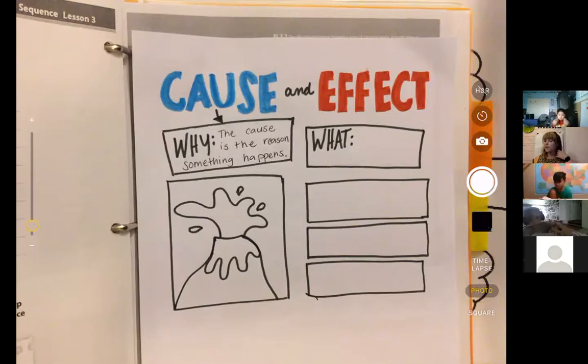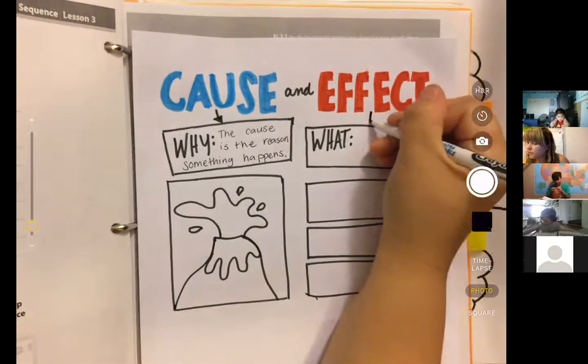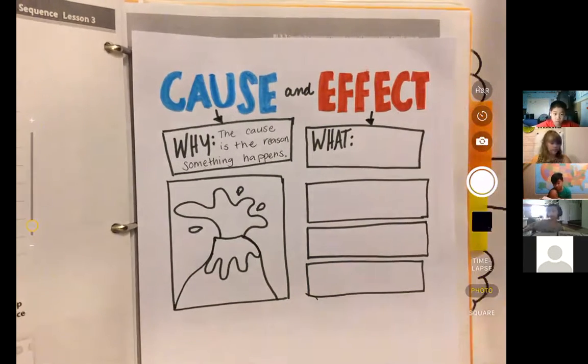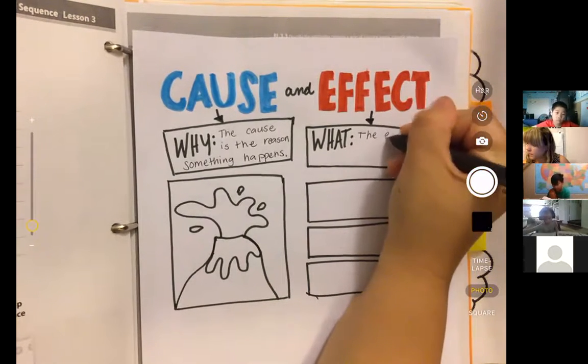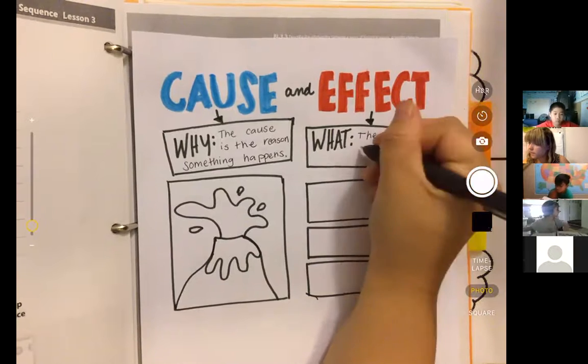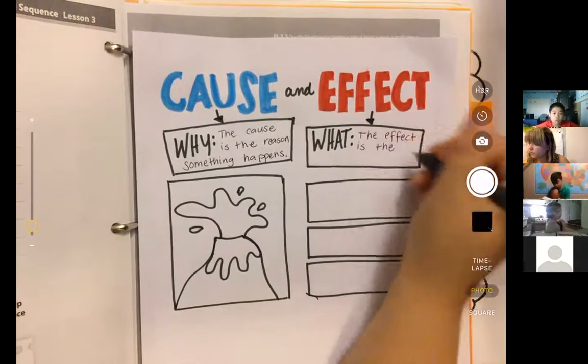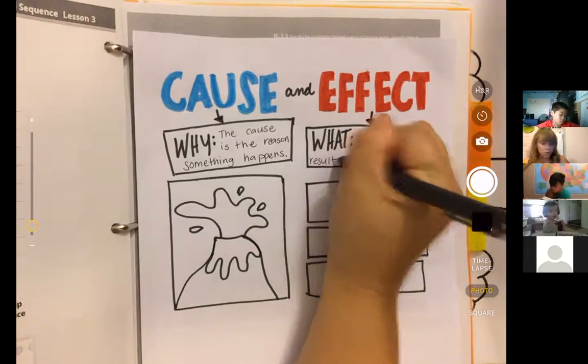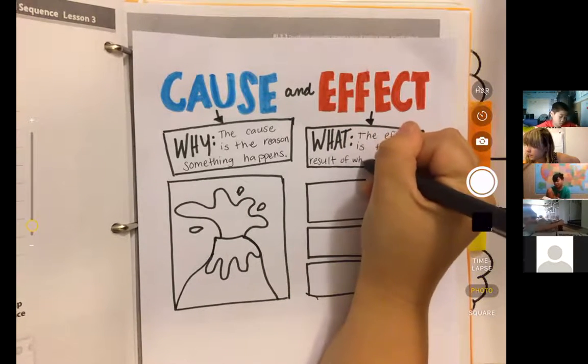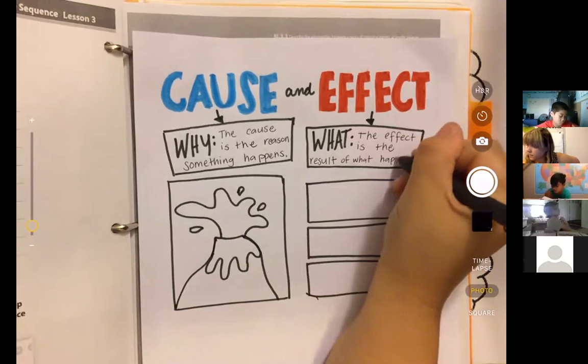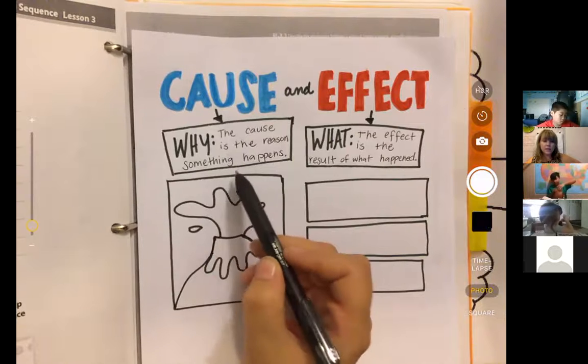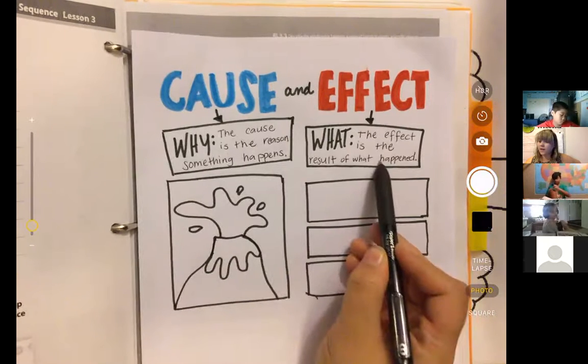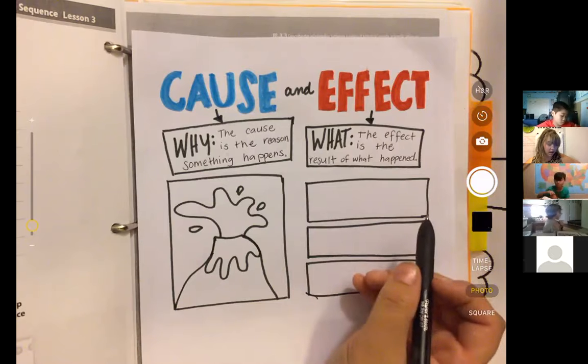There we go. Okay, so the cause is the reason something happens. The effect is the result of what happened. The result of what happened. So the cause is the reason something happened, and the effect is the result of what happened.